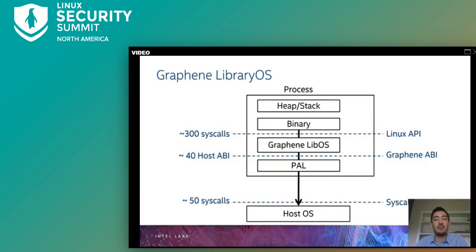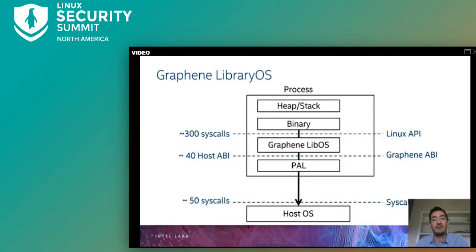Graphene serves as a minimal bootloader and emulation layer sitting between the application and the underlying host OS. You can think of Graphene as a minimal re-implementation of a Linux kernel, which strives to resolve most application requests — in the form of system calls and file access — in user space, occasionally resorting to host OS-provided resources like network I/O, file system I/O, thread scheduling, and process creation. Graphene additionally implements extensive checks on system call arguments and return values, helping to protect against maliciously crafted values.